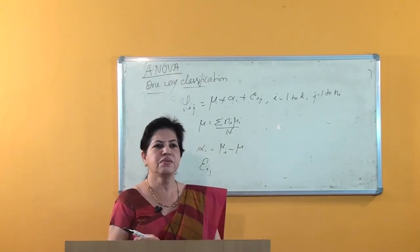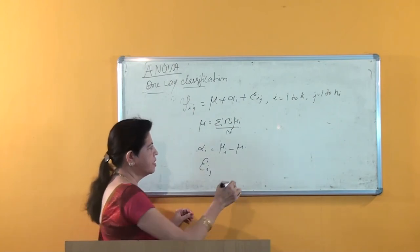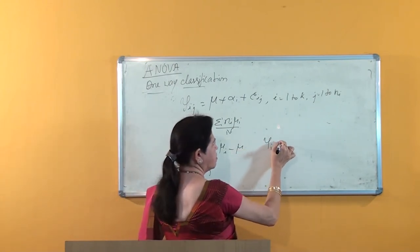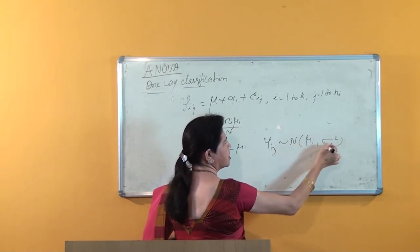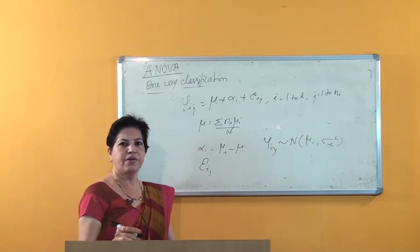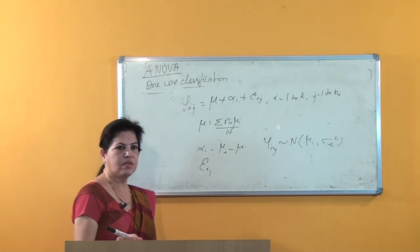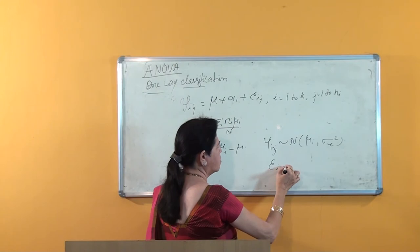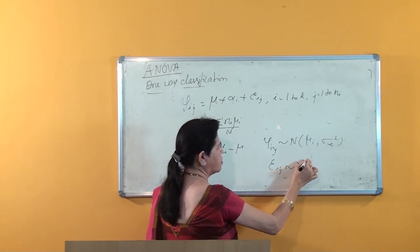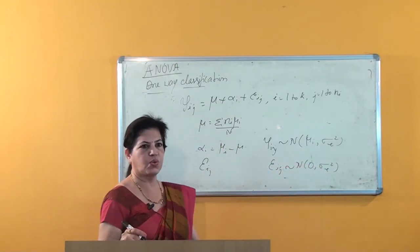The assumptions in this model are: all observations y_ij's are independent, y_ij follows normal distribution with mean mu_i and variance sigma_e squared, different effects are additive in nature, and the error effect epsilon_ij follows normal distribution with mean 0 and variance sigma_e squared.